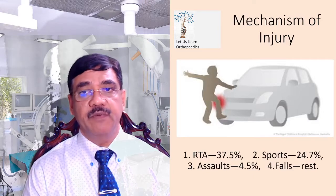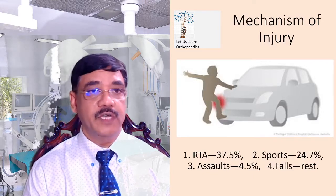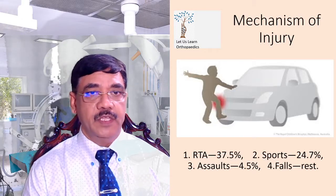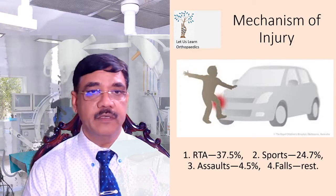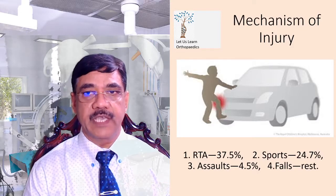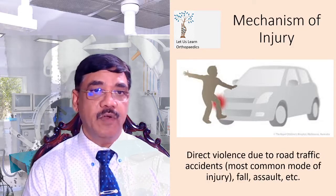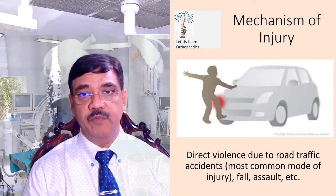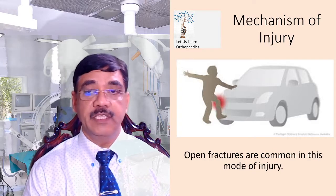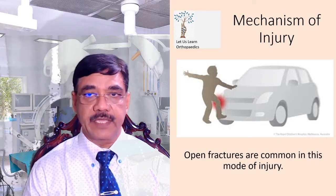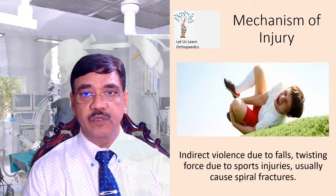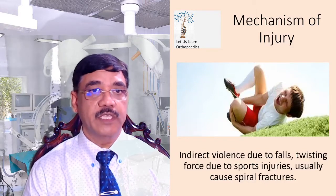Coming to the mechanism of injury, road traffic accident accounts for 37.5%. Sports injuries account for 24.7%, assaults 4.5%, and fall accounts for the rest. Direct violence due to road traffic accident is the most common mode of injury, with open fractures being common in this mode. Indirect violence due to fall and twisting forces from sports injury usually causes spiral fractures.